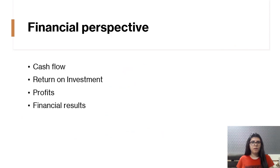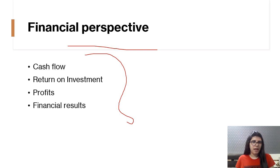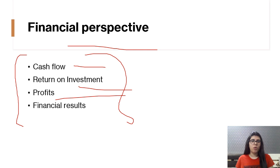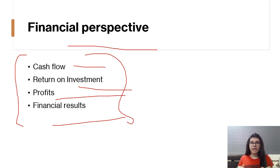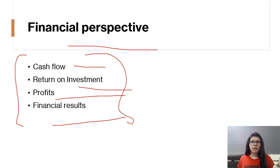Now comes the Financial Perspective. This includes cash flow, return on investment, and profits — the overall financial results of the enterprise. Everything related to finance is covered here: our balance sheet, cash flow statement, and return on investments. Are our returns increasing? Are our profits growing, declining, or stagnant? All of this is included in the financial perspective.